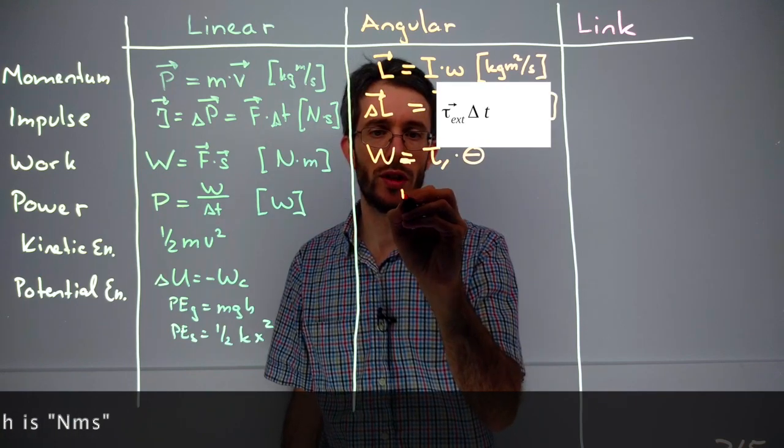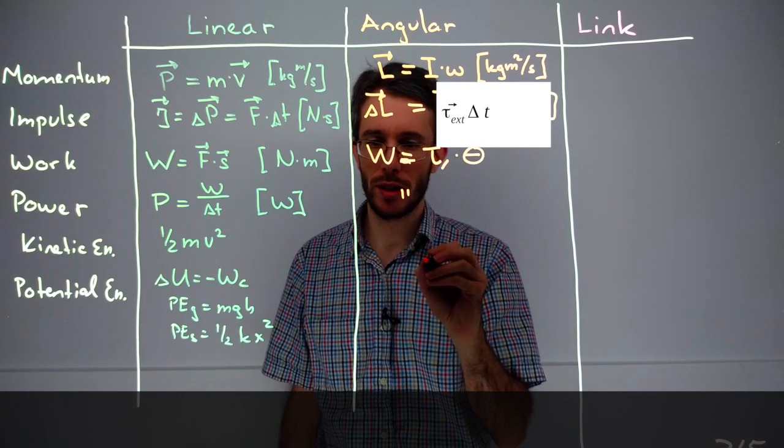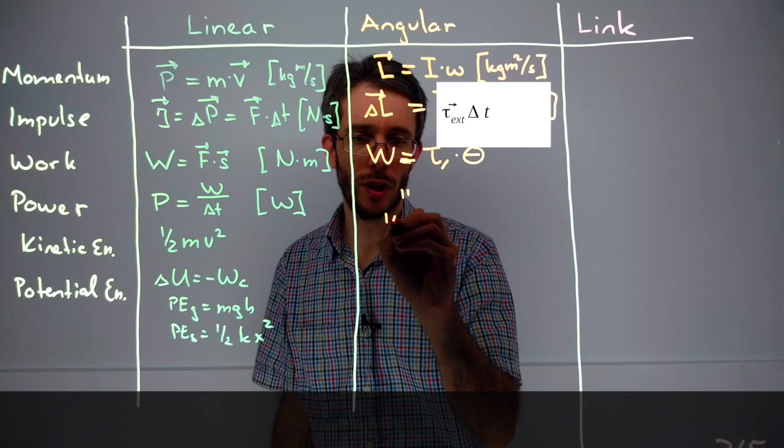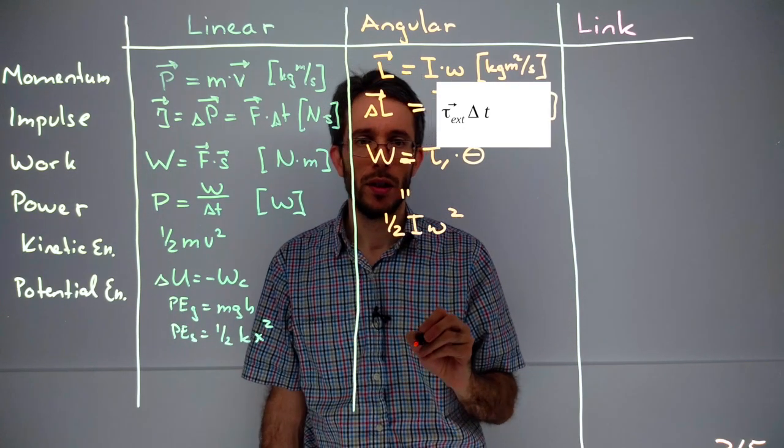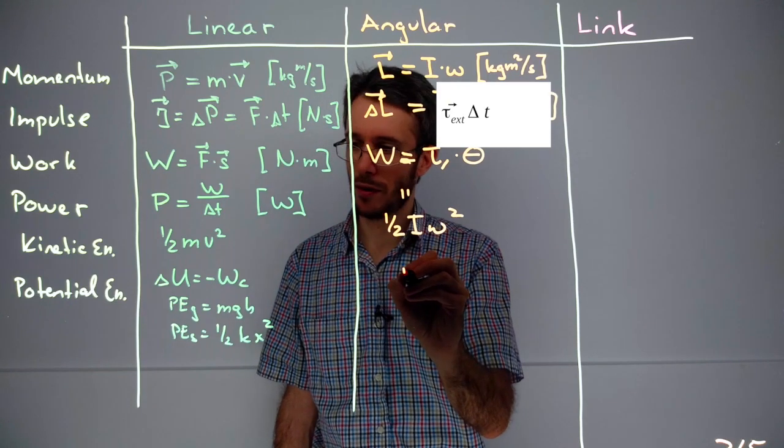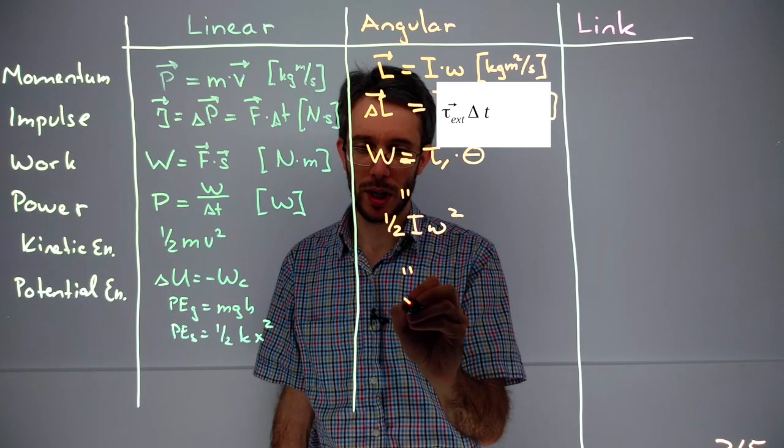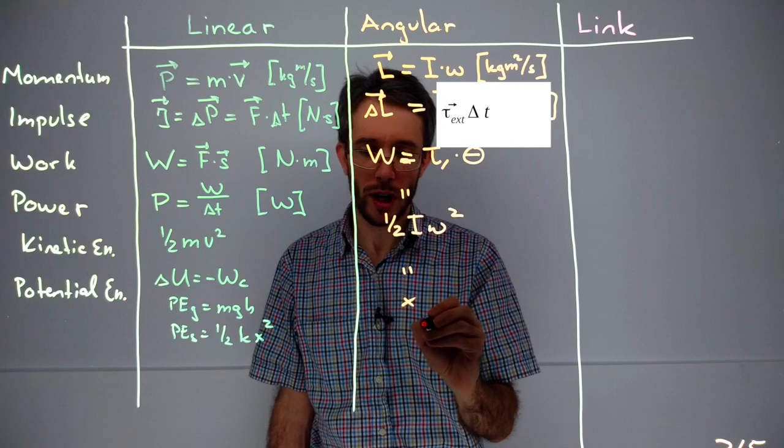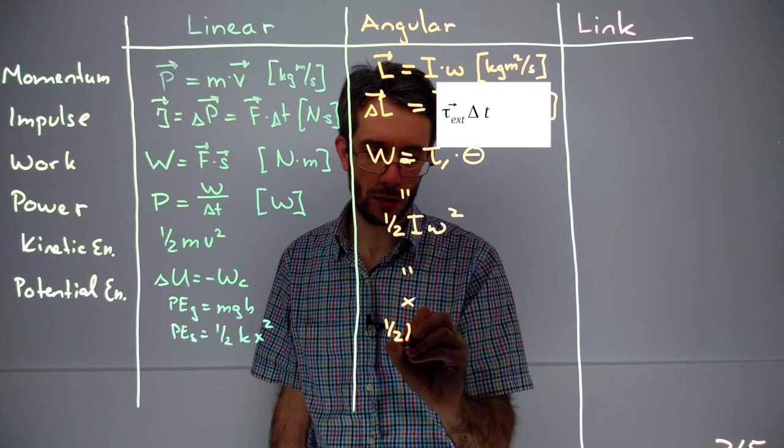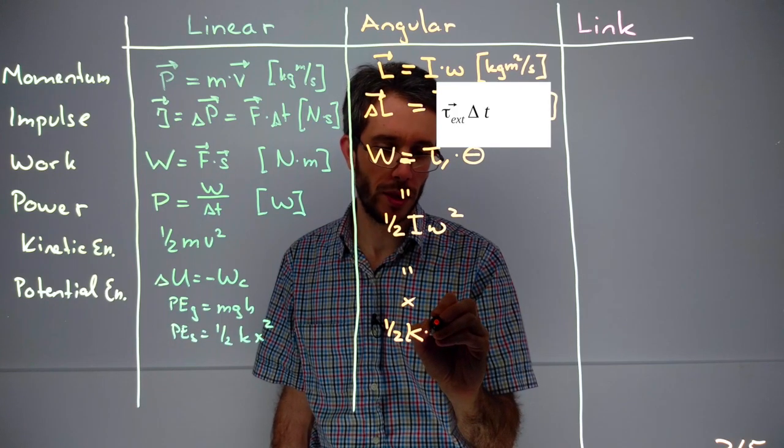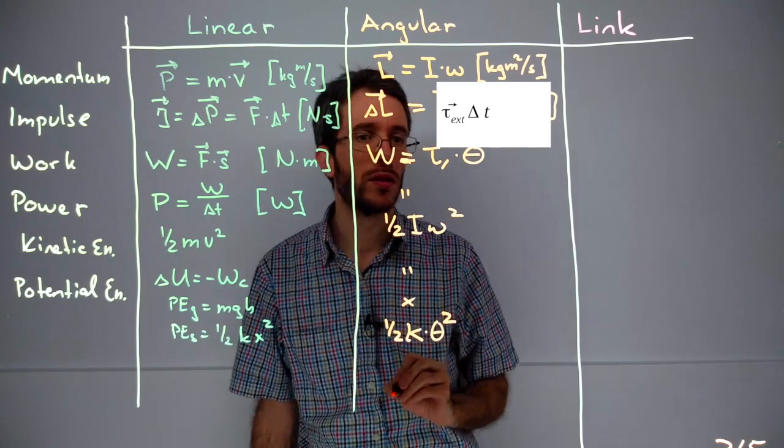Power is the same definition as before, nothing changes. For kinetic energy, we can do one-half I omega squared. And then potential energy is defined as the same, gravity doesn't apply. And the spring, if we have a torsion spring, we can do one-half torsion spring constant times theta squared.